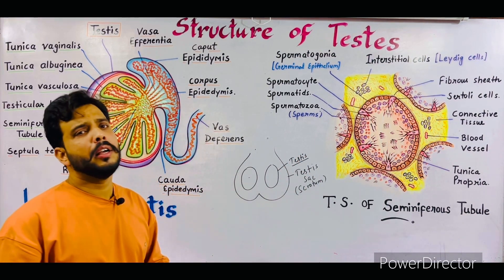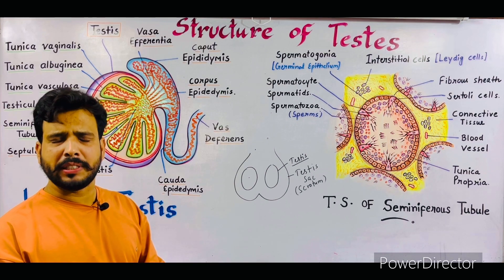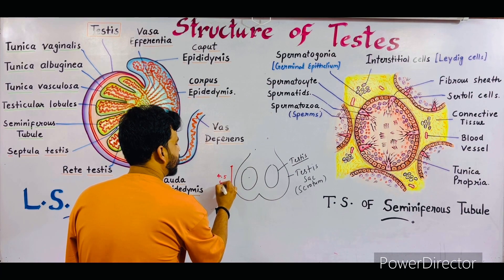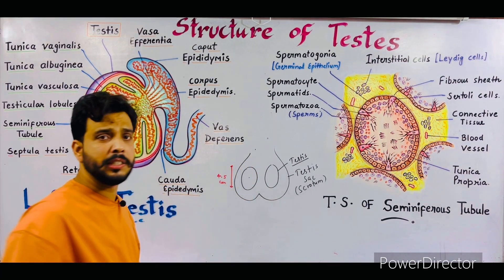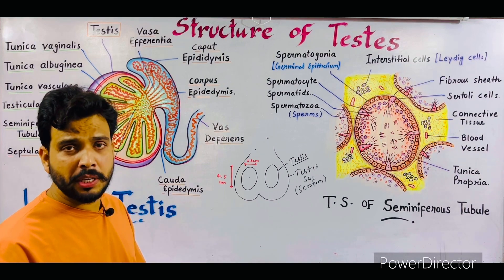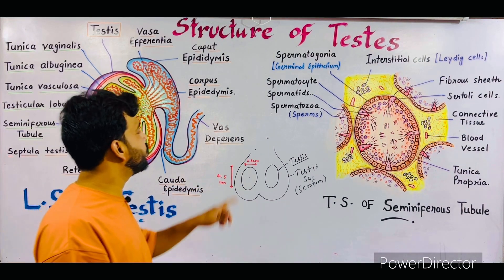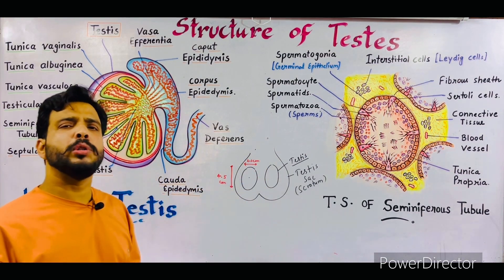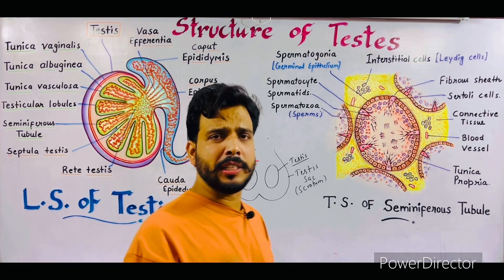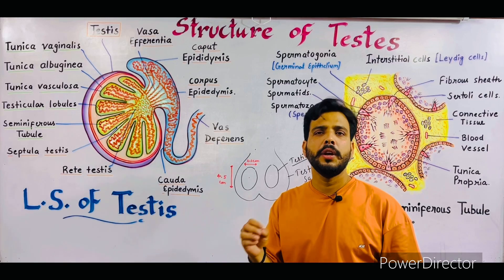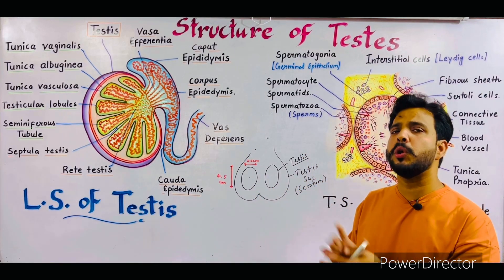Now we will talk about the outer structure or the morphology of the testis. Each testis is about 4 to 5 cm in length. It is oval shaped and about 2 to 3 cm in diameter. If we talk about the weight of testis, each testis is about 14 to 15 grams, and the color of the testis is pinkish white. So that was the morphology of the testis.